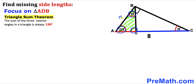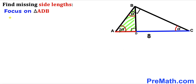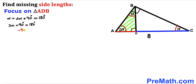Adding all interior angles: alpha plus 2 times alpha plus 90 degrees equals 180 degrees. Combining like terms gives 3 times alpha plus 90 degrees equals 180 degrees. Subtracting 90 degrees from both sides gives 3 times alpha equals 90 degrees. Dividing both sides by 3, alpha turns out to be equal to 30 degrees.